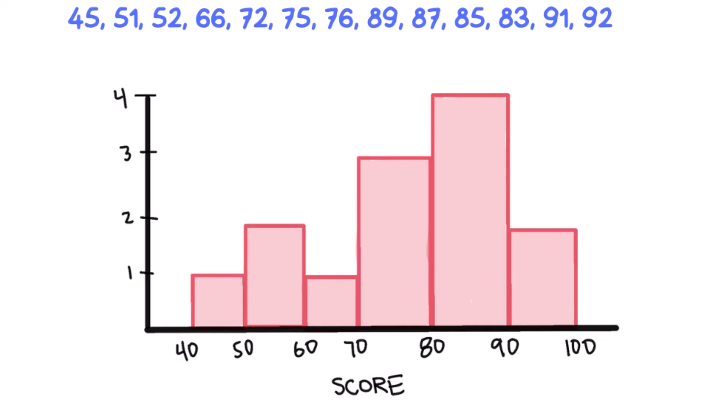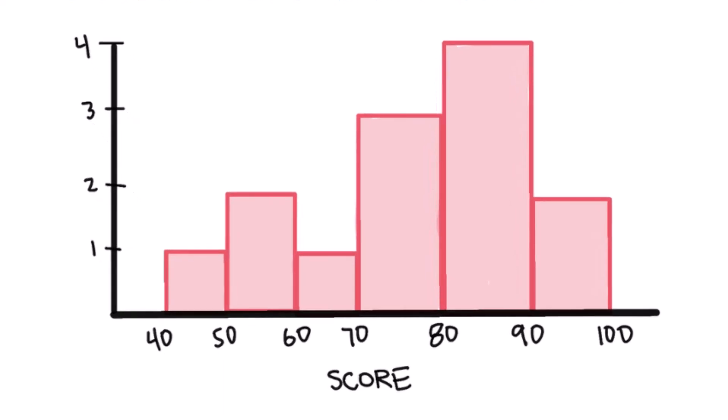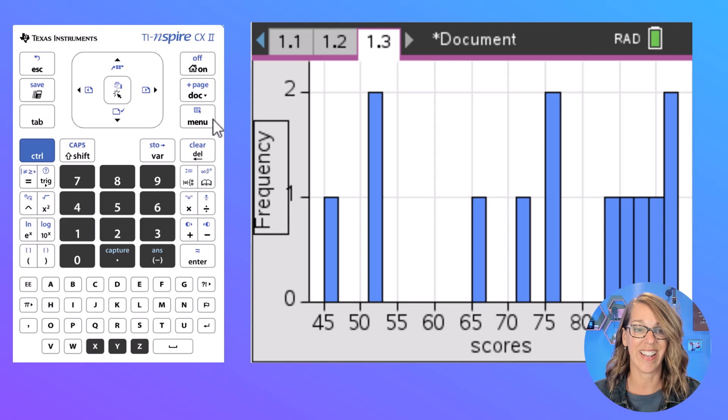Now on my original histogram I had those divided up into what would be letter grades, right? The 50s, the 60s, the 70s, the 80s in groups of 10. So I want to change that bin or that class width or the column width to 10.